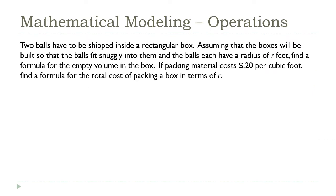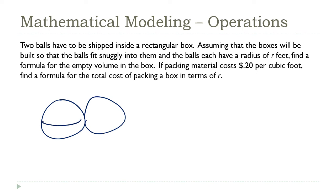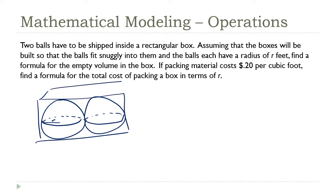One more example — this one is very similar. I have two identical spheres, each with radius r, contained in a box. I want to find the volume outside of the spheres, since that's where the packing material goes. I know the unit cost of the packing material, so I'll find the exterior volume and multiply by the unit cost. I'll use the same approach: volume outside equals the box volume minus the volume of the spheres.